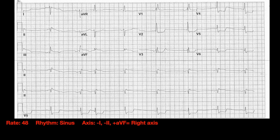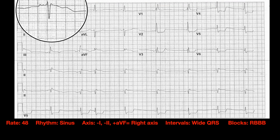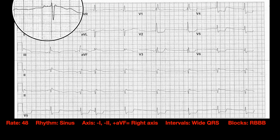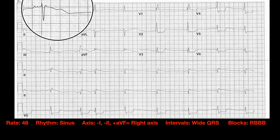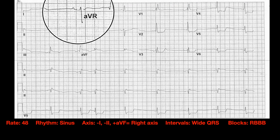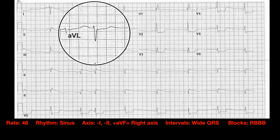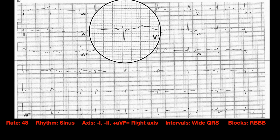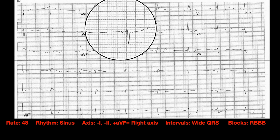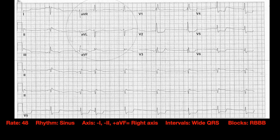So we have a wide complex QRS, normal intervals otherwise, and what looks like a right bundle branch block morphology. Rate, rhythm, axis, intervals, blocks. How about ischemia and infarct? Let's scan through and look at the vascular territory, going left to right. Starting with the lateral leads — it's tough to tell, the QRS is at the peak of a line and it's not clear if it's really up or down. In AVL, the other lateral lead, we see maybe just a little bit of ST depression, perhaps — but again, tough to tell with a wandery baseline.